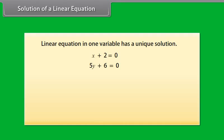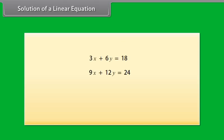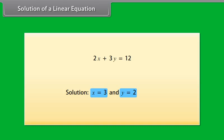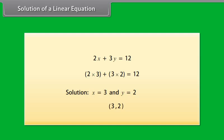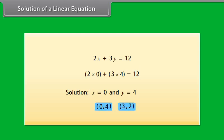Every linear equation in one variable has a unique solution. But how many solutions do linear equations in two variables have? As there are two variables, the solution means a pair of values — one for X and one for Y — which satisfy the given equation. For the equation 2X plus 3Y equals 12, X equals 3 and Y equals 2 is a solution because substituting these values gives 12. We can write this solution as (3, 2). Similarly, (0, 4) is also a solution. We have found at least two solutions for this equation.